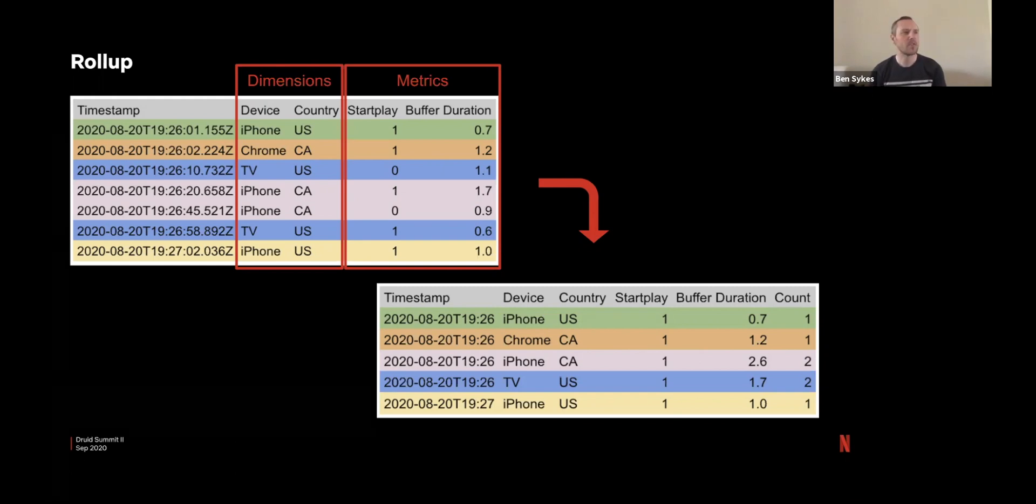So we do 175 billion events a day or thereabouts, so rollup is really important for us and I'll try and explain why.